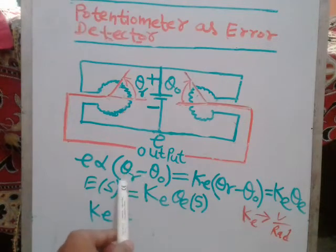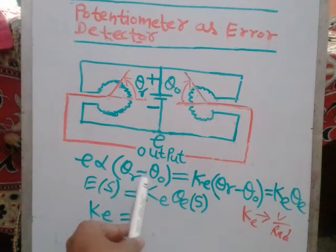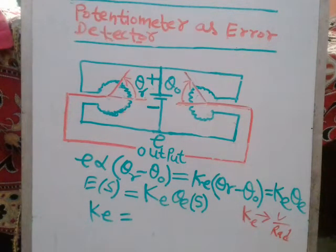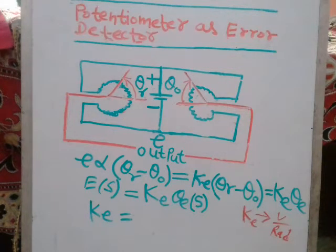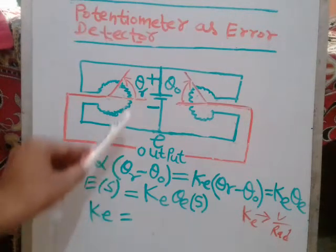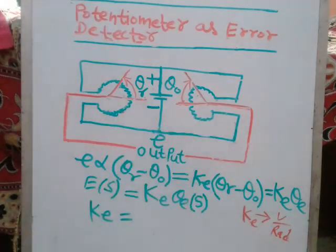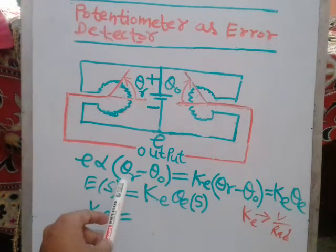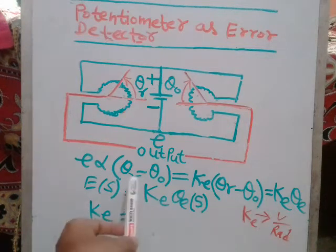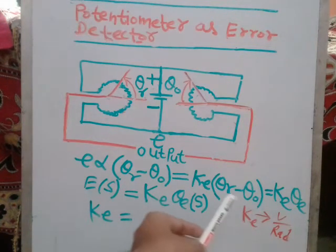A potentiometer error detector measures this error — that is, the difference between the reference angular position and the output position — and converts it into proportional voltages. The error e is proportional to the difference in angular position, that means theta_r minus theta_naught, written as theta_e.